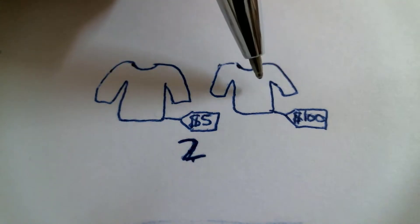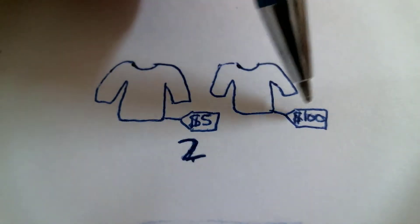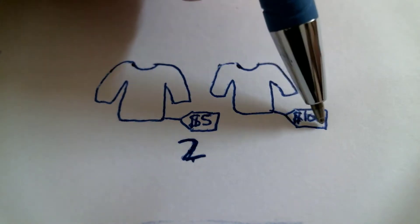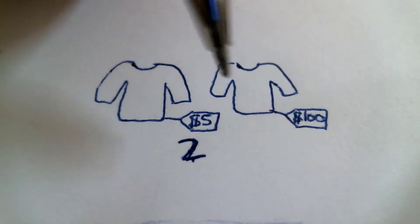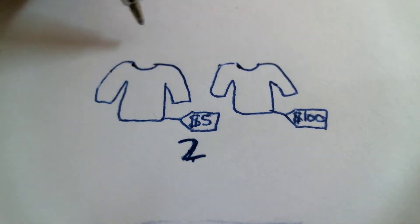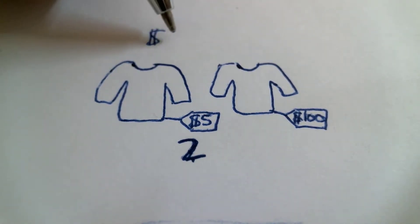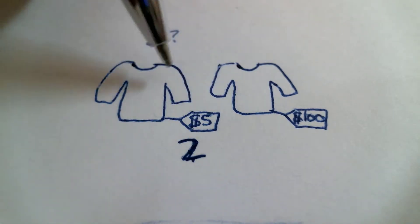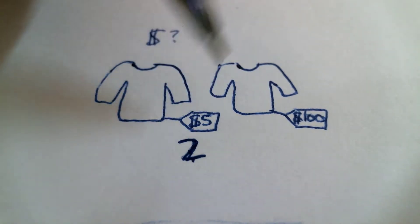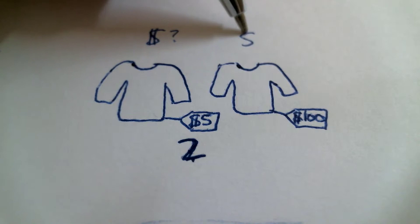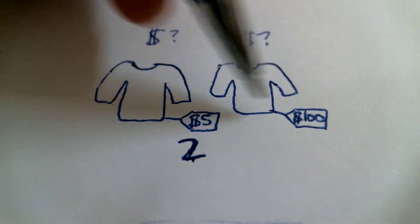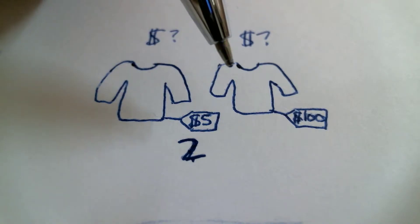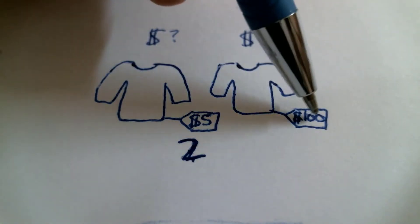How much does this shirt cost? How much does it cost? It costs one hundred dollars. How much does this shirt cost? This shirt costs five dollars. How much does this shirt cost? This shirt costs $100.